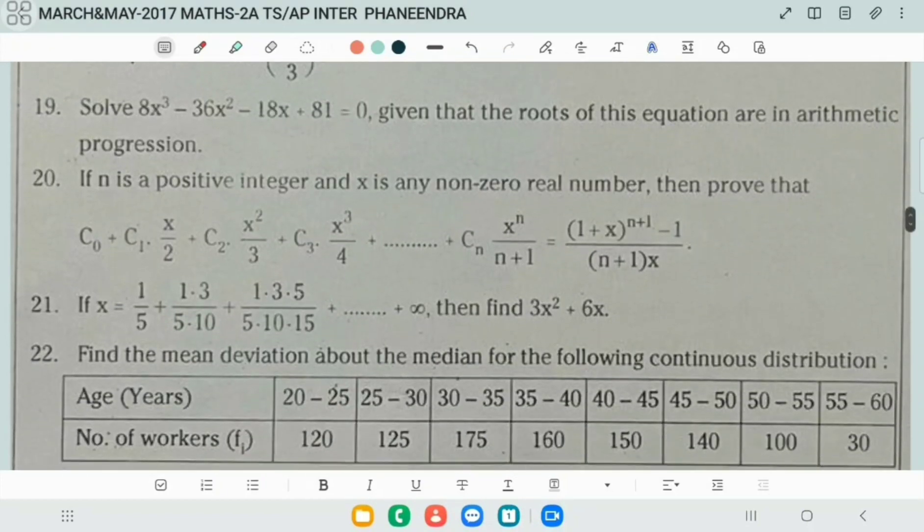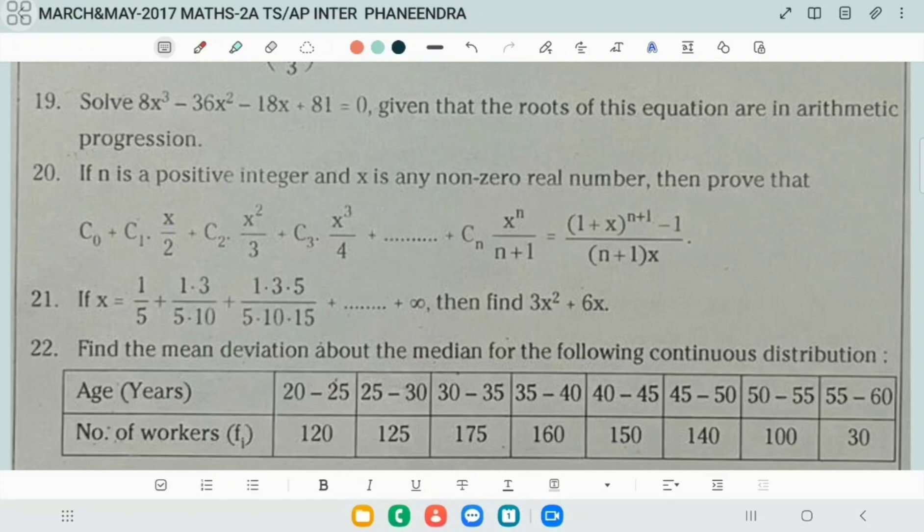Next, this is an example problem and theorem. If n is a positive integer and x is any real number, then prove that. The question number 21: if x equals 1 by 5 plus 1 into 3 by 5 into 10 plus 1 into 3 into 5 by 5 into 10 into 15 and so on infinity, then find 3x squared plus 6x.